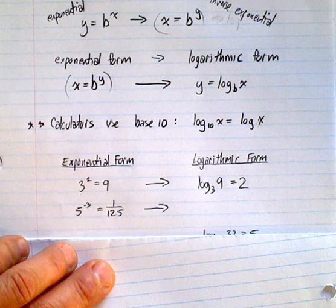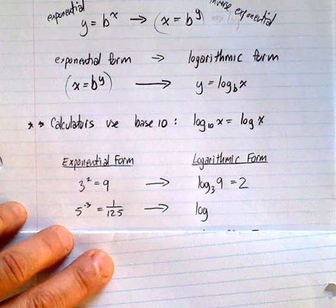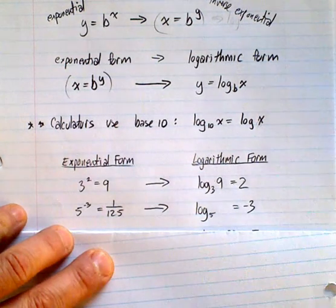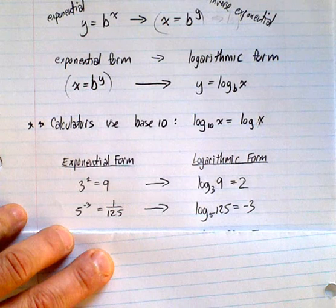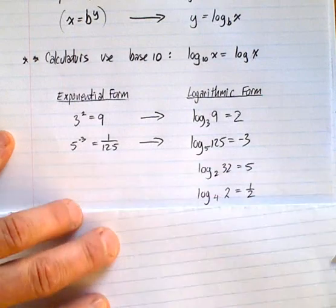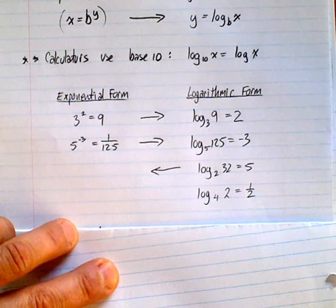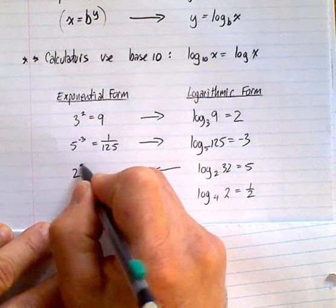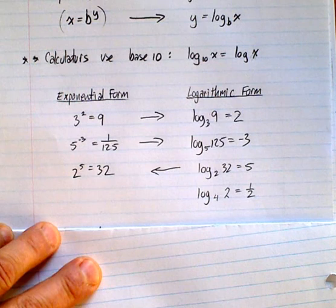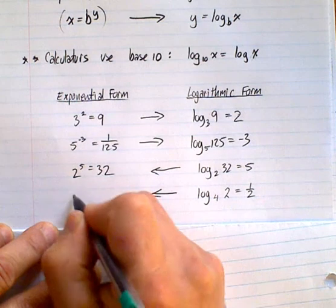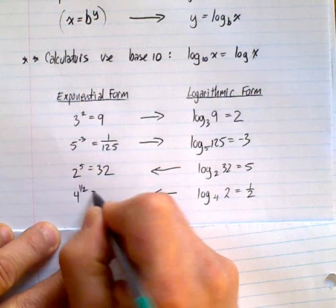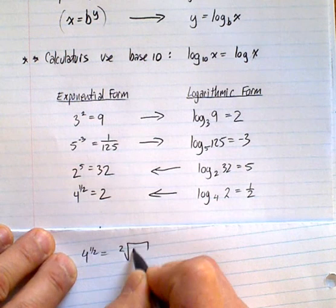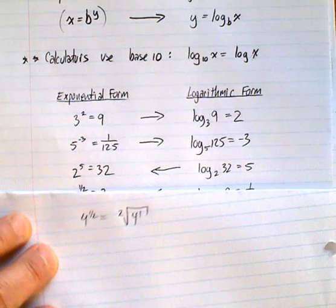So let's try it again. Log base is what? Base is 5. Equals what? Equals the exponent, which is negative 3. And the 125 goes in there. Let's have a look at the other way now. Let's go backwards in this form. Well, 2 is the base, so 2. It equals the exponent. Power of 5 is 32. Let's try it again. The base is 4. The exponent is what it equals to. 4 to the power of 1 half is 2. And hopefully you remember that 4 to the power of 1 half is the same as saying the square root of 4 to the power of 1.